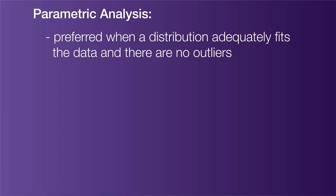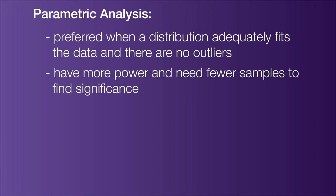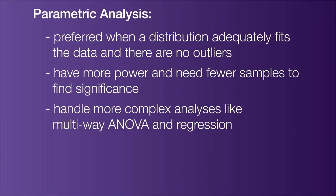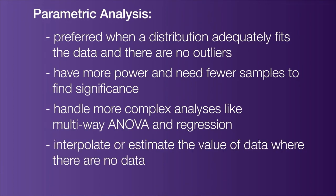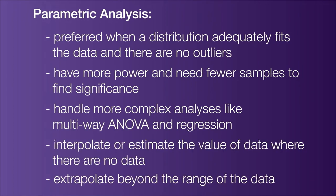Parametric tests are generally preferred when a distribution adequately fits the data and there are no outliers. Parametric tests have more power, which means they need fewer samples to find significance, and they can handle more complex analyses like multi-way ANOVA and regression. Another benefit is their ability to interpolate or estimate the value of data where there are no data, and to extrapolate beyond the range of the data.